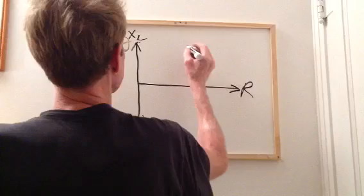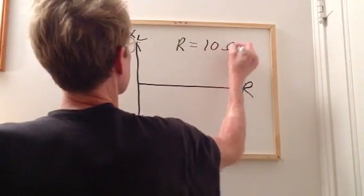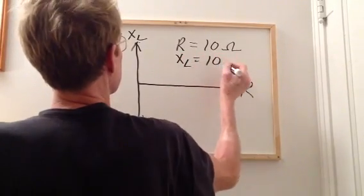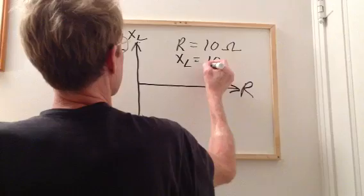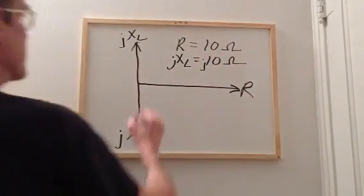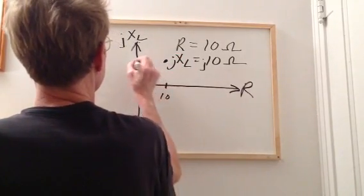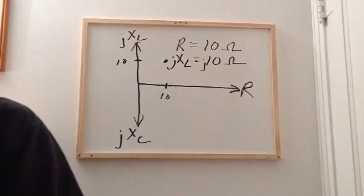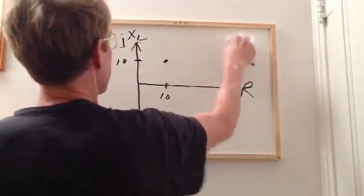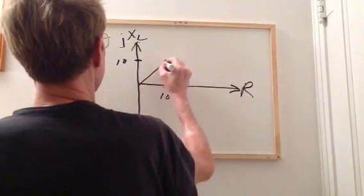So, suppose you have a resistor of 10 ohms and an inductor that exhibits 10 ohms of inductive reactance. Then you're going to have a point which lies at 10, 10, like that. And you can assign it a vector like that.